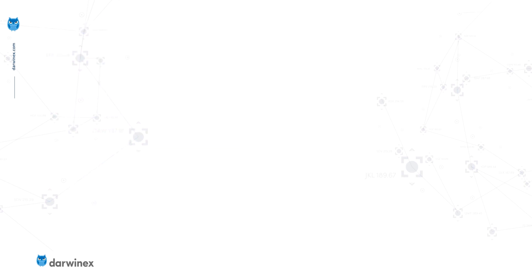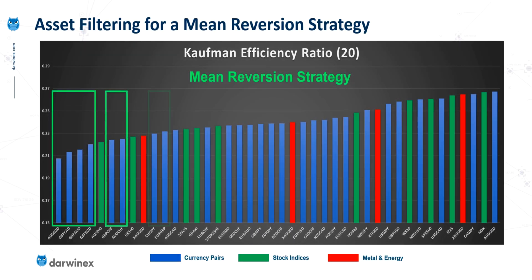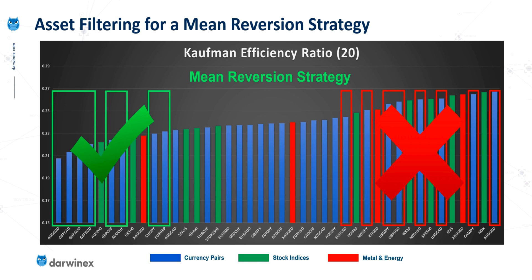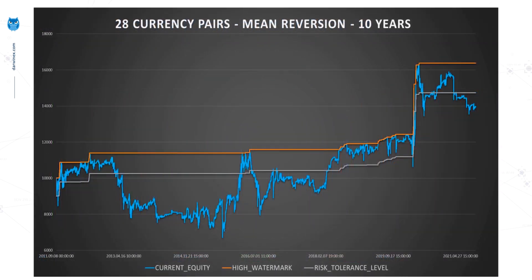Taking all of that into account, these are the eight most noisy currency pairs as measured by the efficiency ratio — the theory says these should perform well. Our second group uses the eight least noisy, which shouldn't perform well, but we still want to undertake backtesting to compare them. So let's now take a look at the backtest equity curve, firstly when trading all 28 currency pairs — here we're not performing any asset filtering at all.